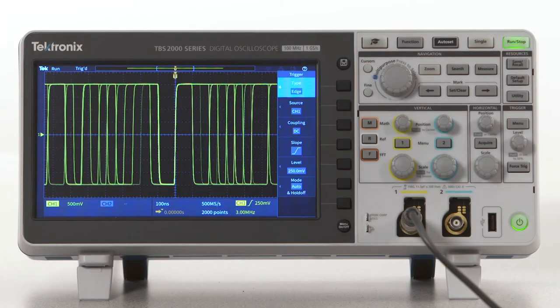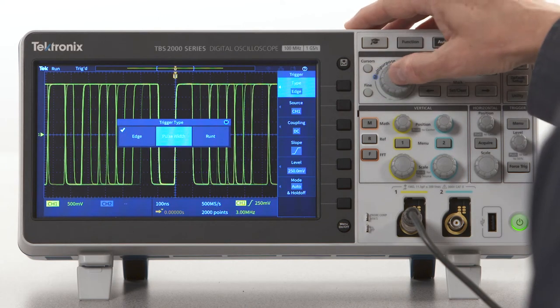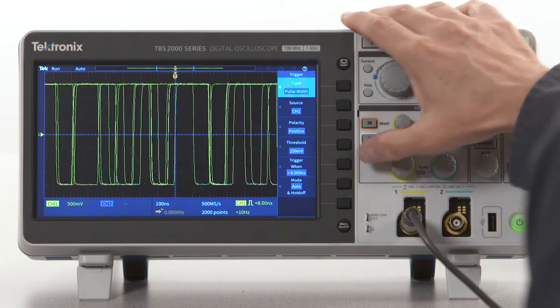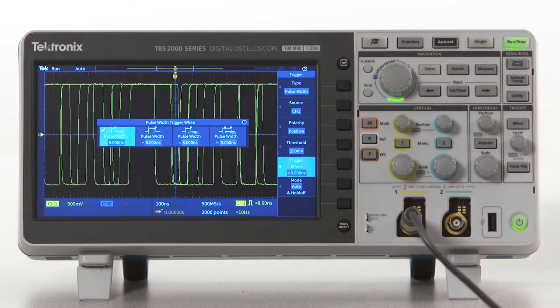Pulse width triggering comes in handy for capturing these events by triggering the oscilloscope on a positive or negative pulse of a duration you specify. Let's look at a couple of examples.